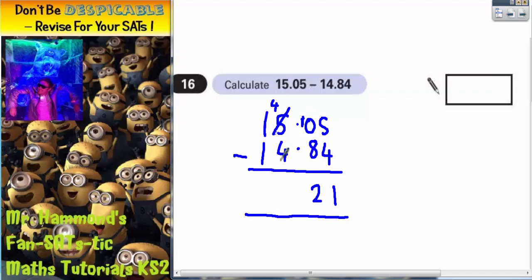That's 2. 4 take away 4 is 0. And 1 take away 1 is 0. So all we need to do is put the decimal point in. So it's got to go there because it's lined up with the other points.